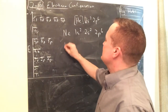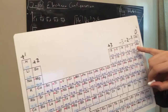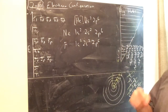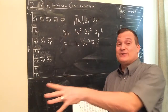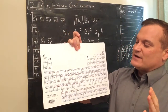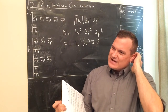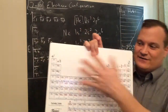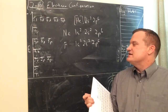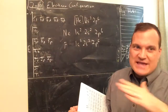Fluorine's electron configuration ends at 2p⁵ — neon is 2p⁶, and fluorine is one step below at 2p⁵. There's something interesting about atoms: the periodic table was designed after electron configuration and quantum chemistry. Earlier than the early 1900s, the chart looked different. Atoms like to have full shells — they're more stable, with lower potential energy.